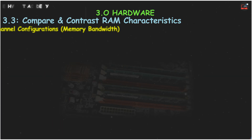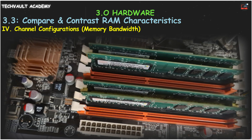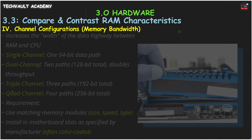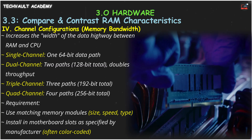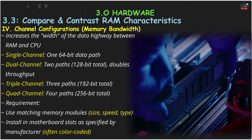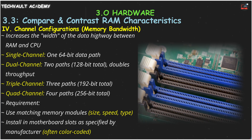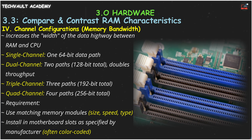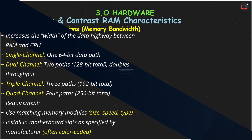Finally, let's look at channel configurations. To increase the data highway's width between the RAM and the CPU, motherboards use multichannel configurations. A single-channel setup is like a one-lane road. Dual-channel uses two memory modules in matched slots, creating a two-lane highway that doubles the memory throughput. Many systems also support triple-channel or quad-channel for even more bandwidth. To take advantage of this, it's essential to install memory modules in pairs or sets. Motherboard slots are often color-coded to show you which ones to use for a multichannel setup.